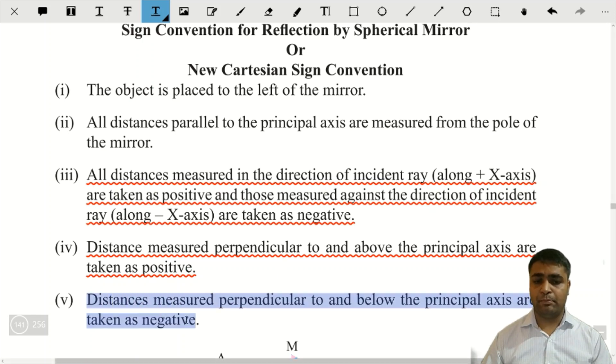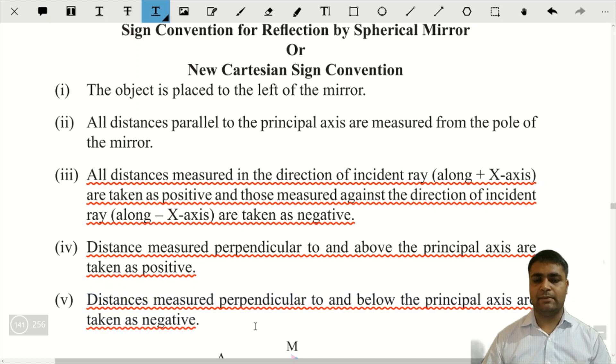Or, joh bhi distances principal axis se neeche banengi, below banengi, woh kya honge? Negative.